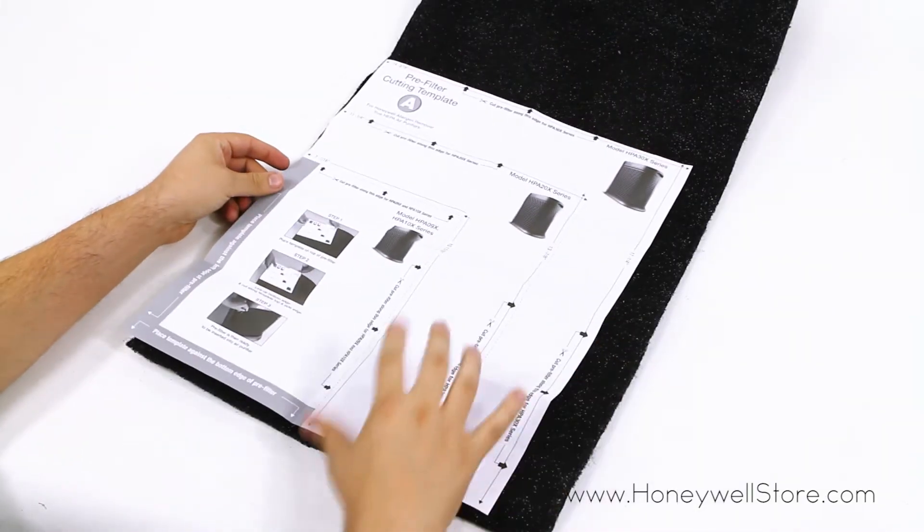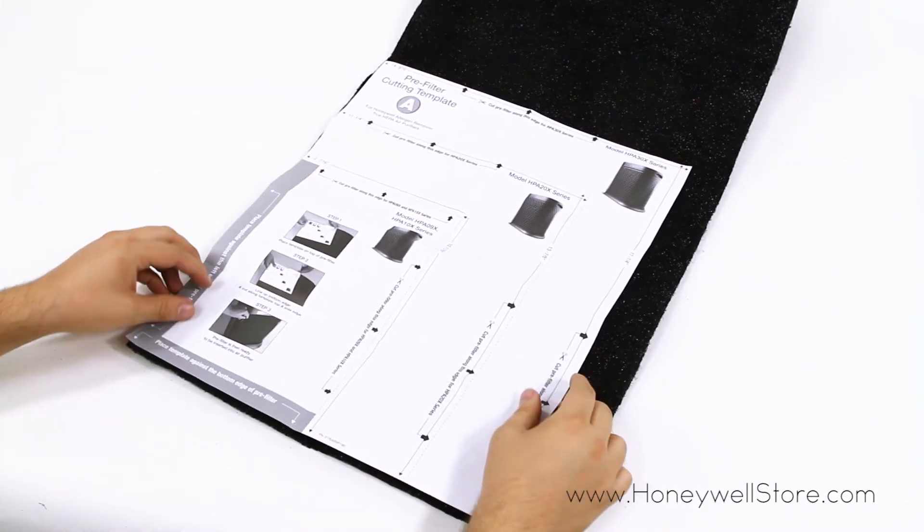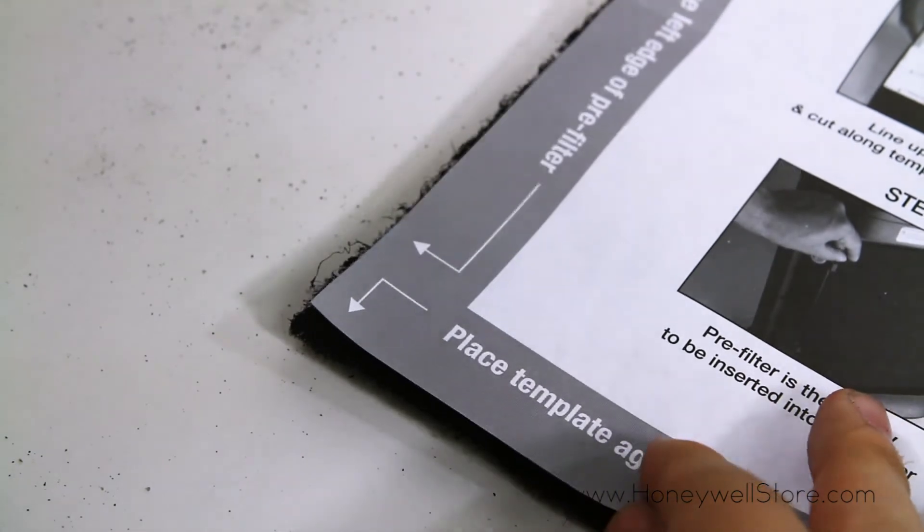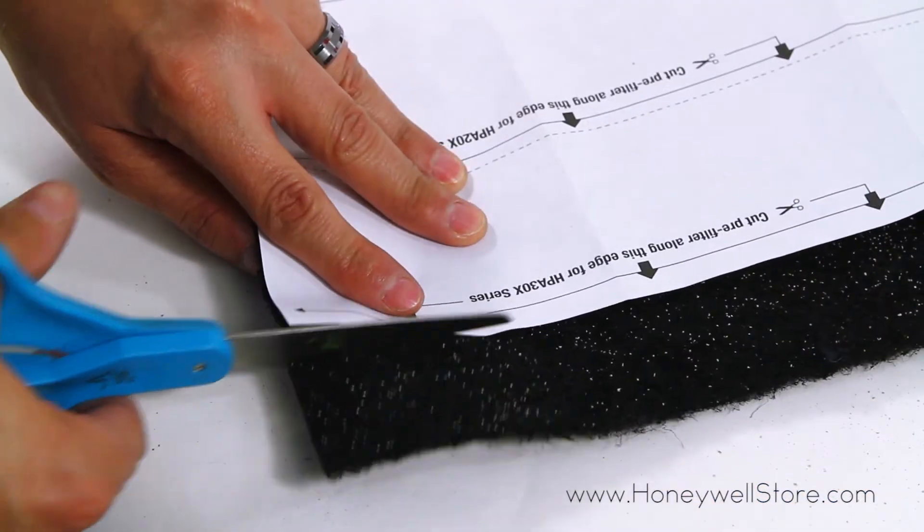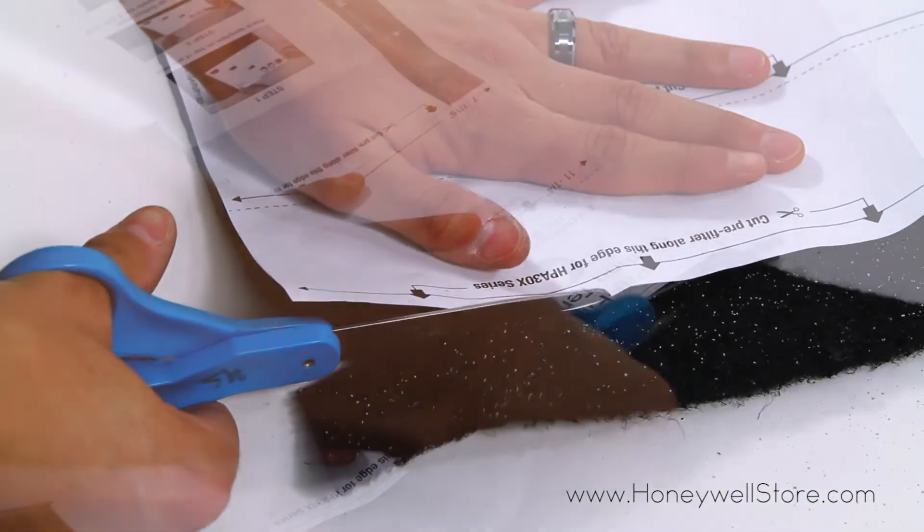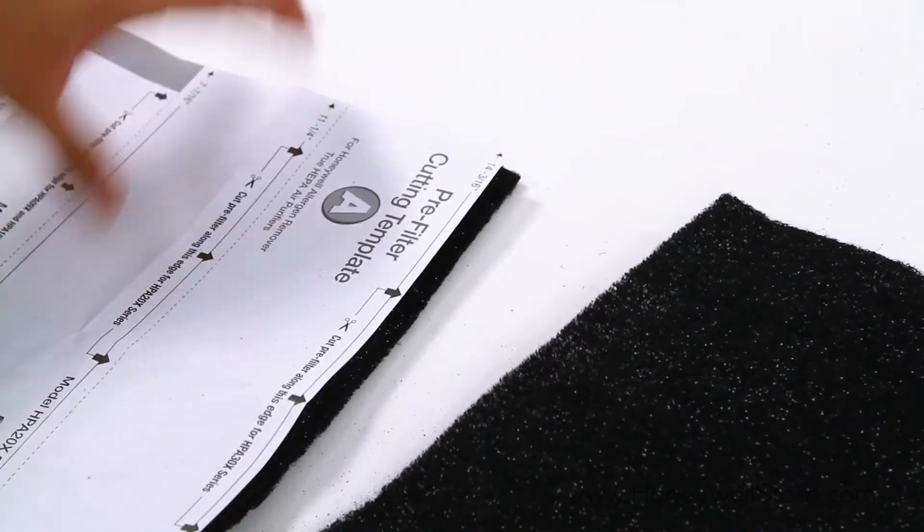Simply place your pre-filter template on top of your carbon pre-filter and line up the corners. Then cut along the edge of your model's template and soon you'll have a perfectly sized pre-filter to use.